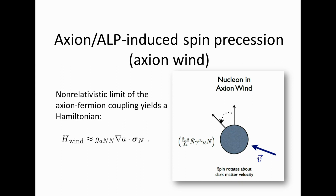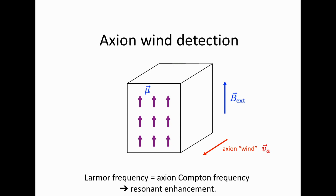You want basically a transverse component of the field, and you don't know a priori what direction the axion wind will point. There'll be some fluctuations as the field changes over some coherence timescale. In general, you'll need a transverse component of the field to produce the resonant interaction. There's a question of what's the projection of this field perpendicular to the external field — generally there'll be some component there, but it's difficult to ensure it's always exactly perpendicular since we don't know the direction of the axion wind at any given moment. Generally speaking, we're moving through the dark matter cloud in some particular direction, with fluctuations around that direction.